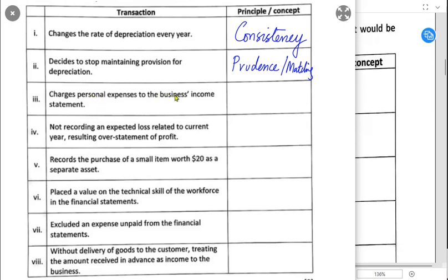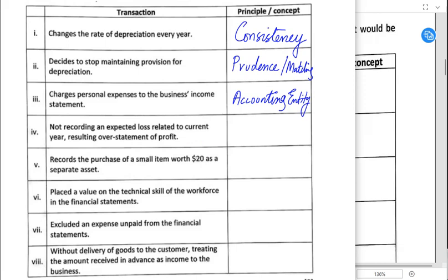Charging personal expenses to the business income statement: we just studied that business should be treated separately from its owners — that is the accounting entity or business entity concept. Not recording an expected loss in the current year, resulting in overstatement of profit: this violates the prudence concept. Prudence means showing the true picture of the business and presenting the worst-case scenario, not the best case.